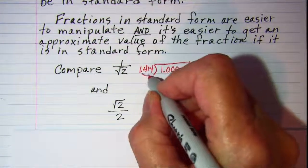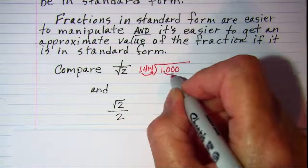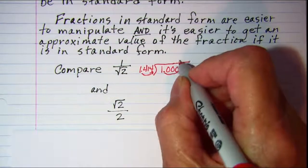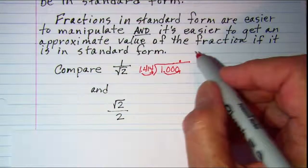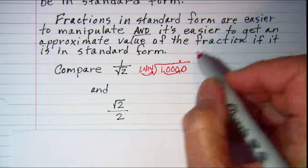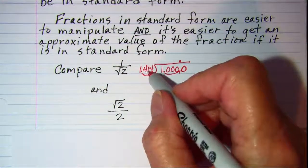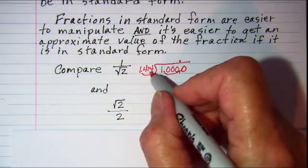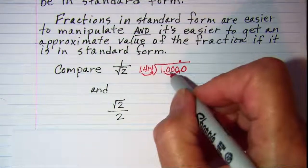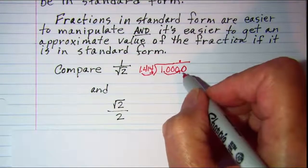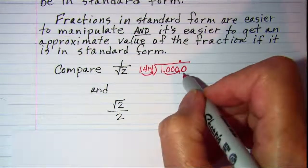Move this decimal over three places, our decimal would be up here. And then we need to annex another zero in the back so that we're taking 1,414 divided into 10,000. So this is a little complicated.